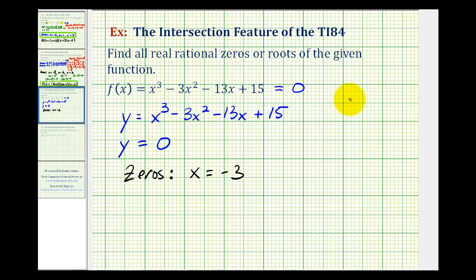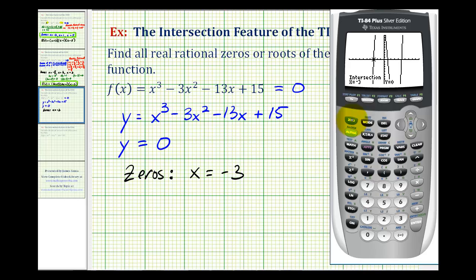Now let's go find the other two zeros. So again, we could just press second trace, option five. Move the cursor closer to this x-intercept in the middle. Pressing the right arrow. That's close enough.